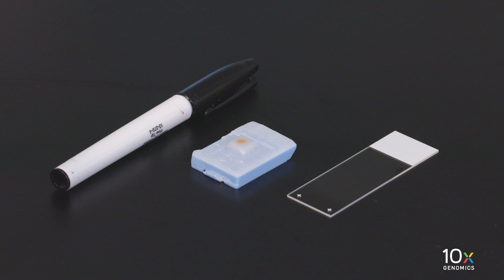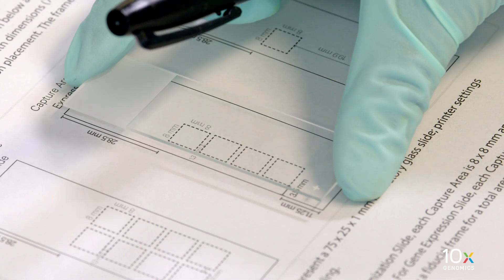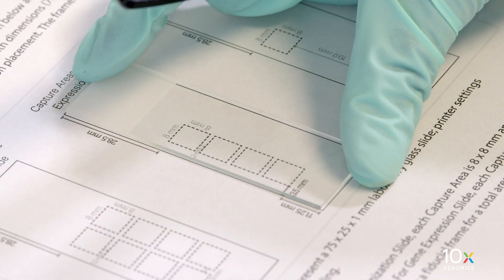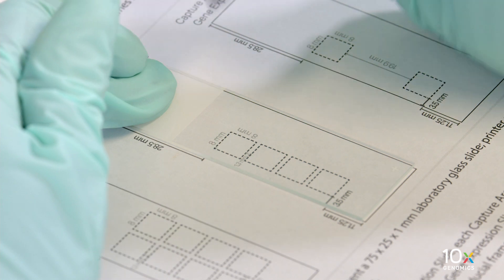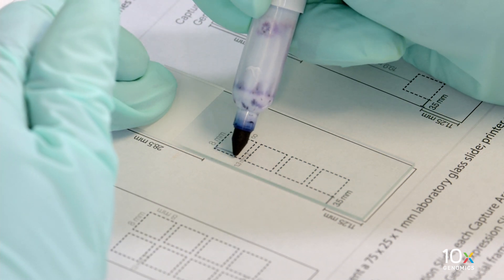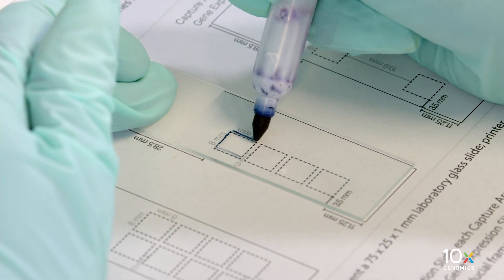Flip the glass slide over so that the back of the slide is facing up. Using the marker, trace the capture area layout of a visium spatial slide on the plain glass slide.